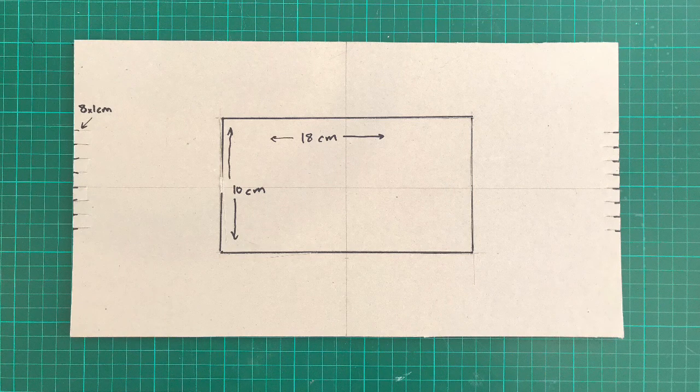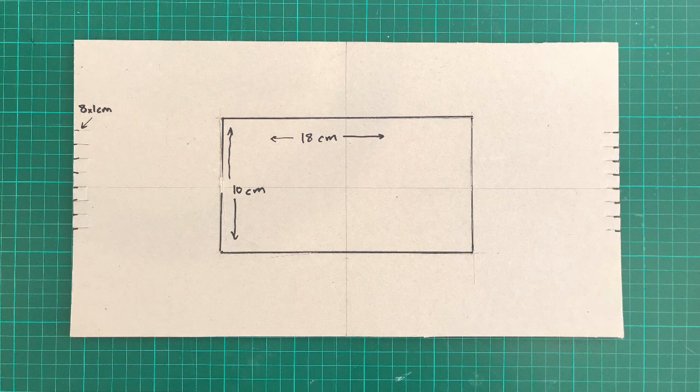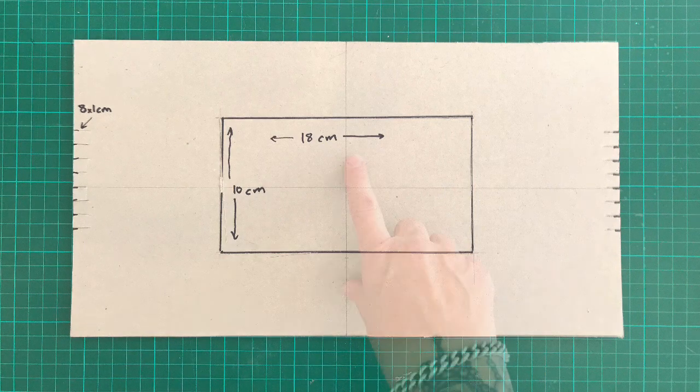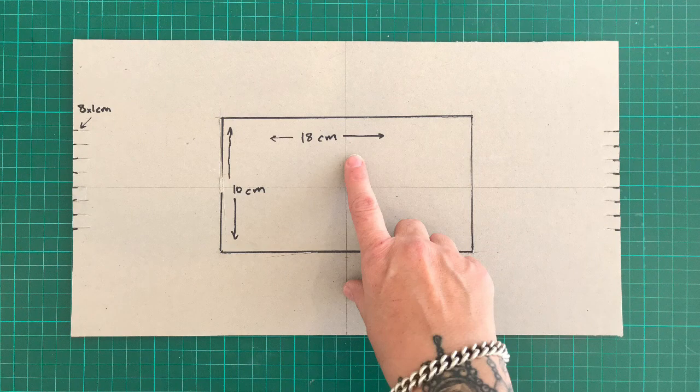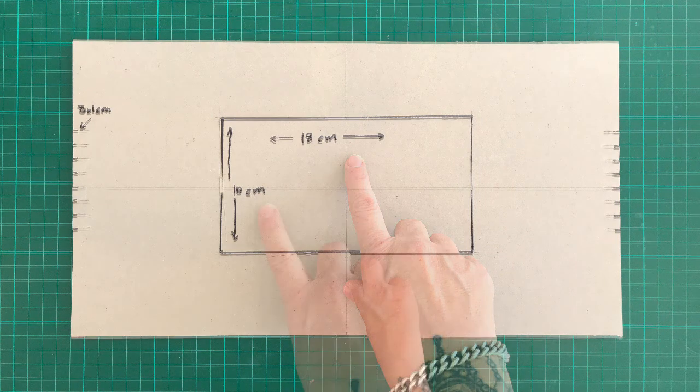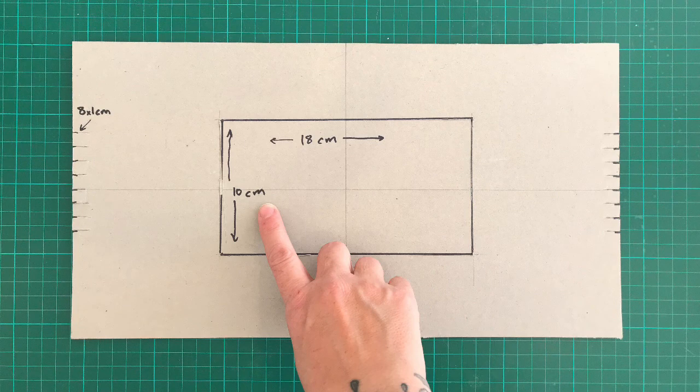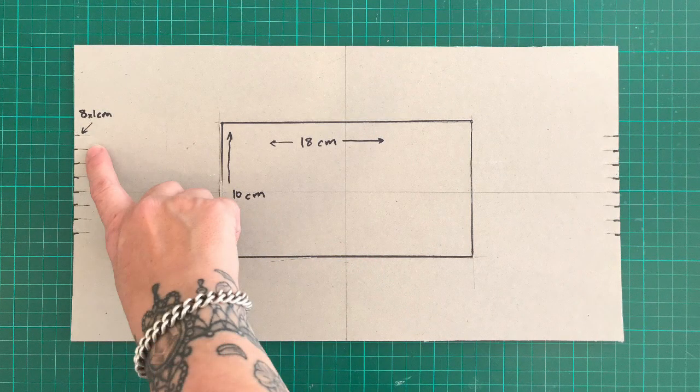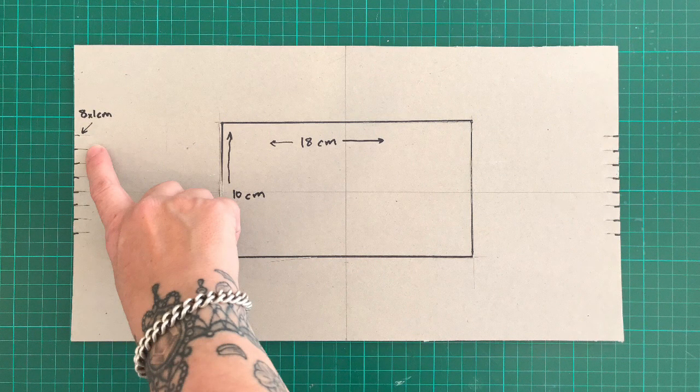The first thing to do is to make the loom. This piece of cardboard is a sturdy piece of A3 off the back of an art pad. The most important dimensions are these in the center here: 18 cm by 10 cm that we're going to cut out, and then 8 notches 1 cm apart on either end.